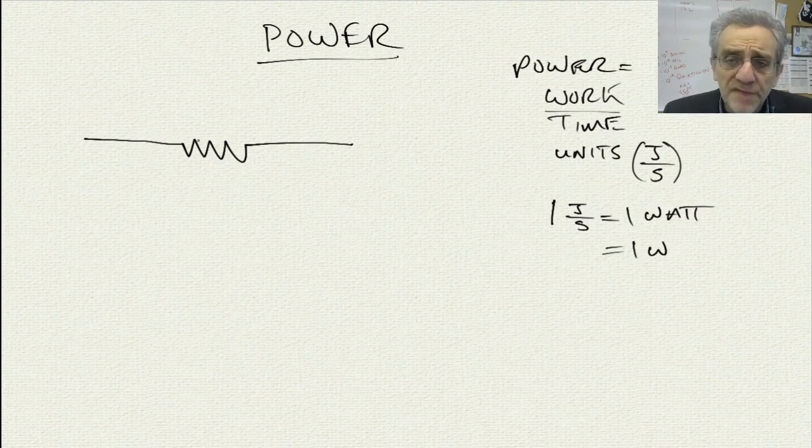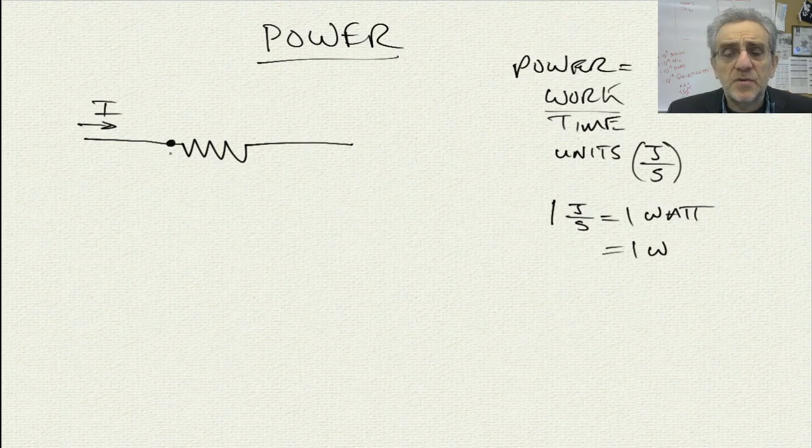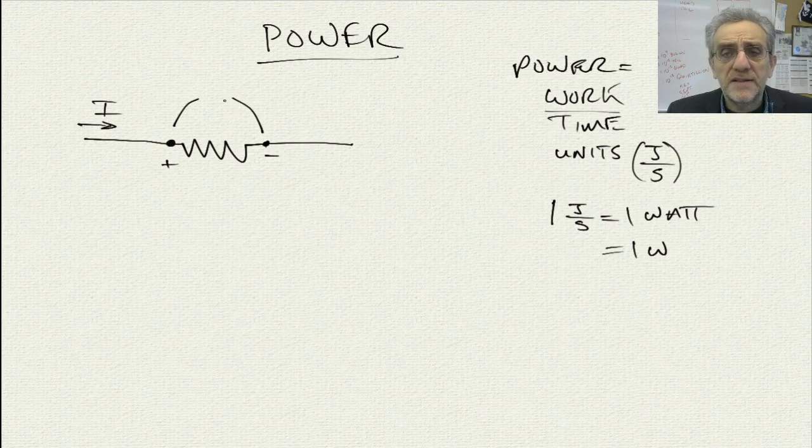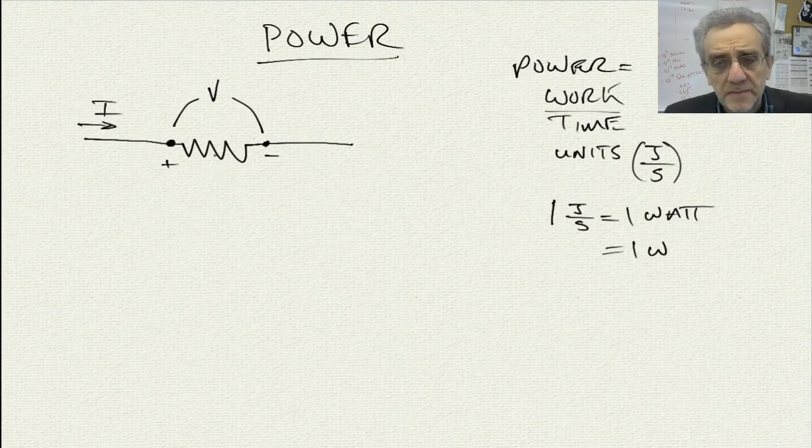Now, when we have power flowing through a circuit, let's say our current is traveling in this direction, then this side would be our high voltage side and this side would be our low voltage side. We have a voltage drop across this resistor of V and the current traveling through it is I and the power dissipated through this circuit or this resistor is equal to I times V.